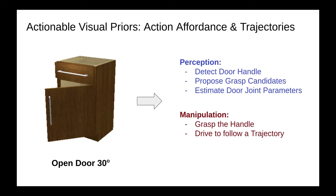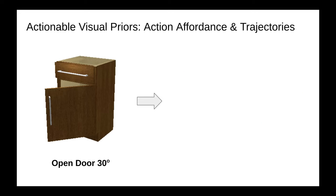In this paper, instead of using rule-based heuristics, we propose to train a perception system that predicts actionable visual priors for manipulation tasks.